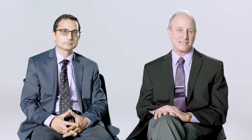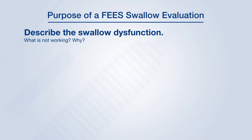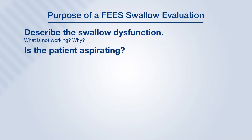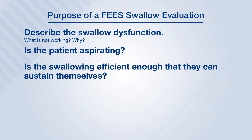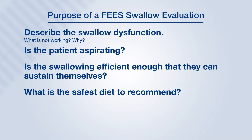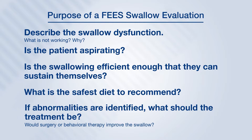What are we trying to learn from an instrumental swallow evaluation — in this case FEES? Number one, does the patient have an abnormal swallow? If so, we need to describe it with regard to aspiration. We need to consider swallow efficiency — the largest question being whether the patient is able to sustain themselves nutritionally and hydrationally. We would like to recommend the safest diet for the patient, and if there is an abnormality, consider whether treatment should be behavioral or surgical.